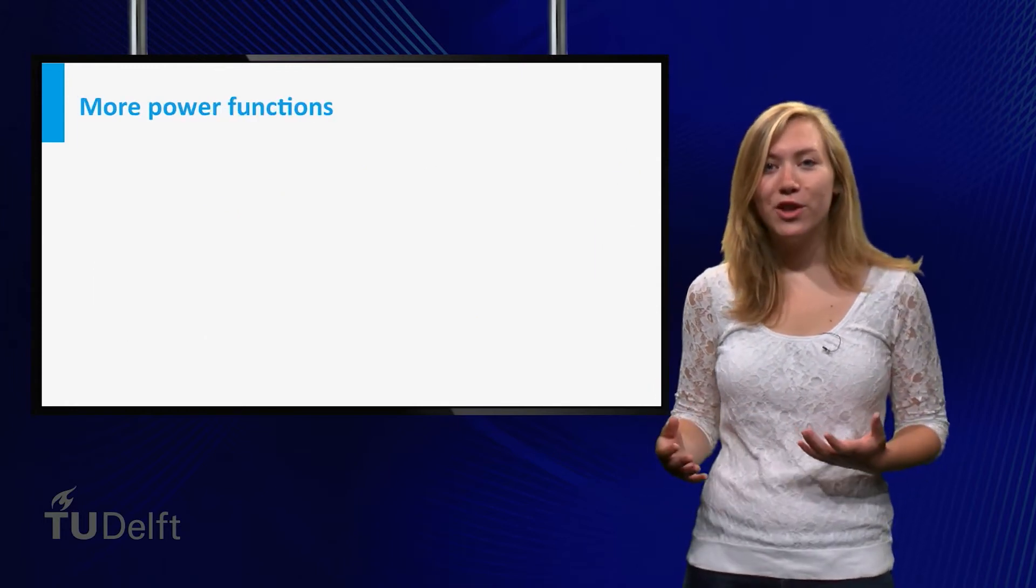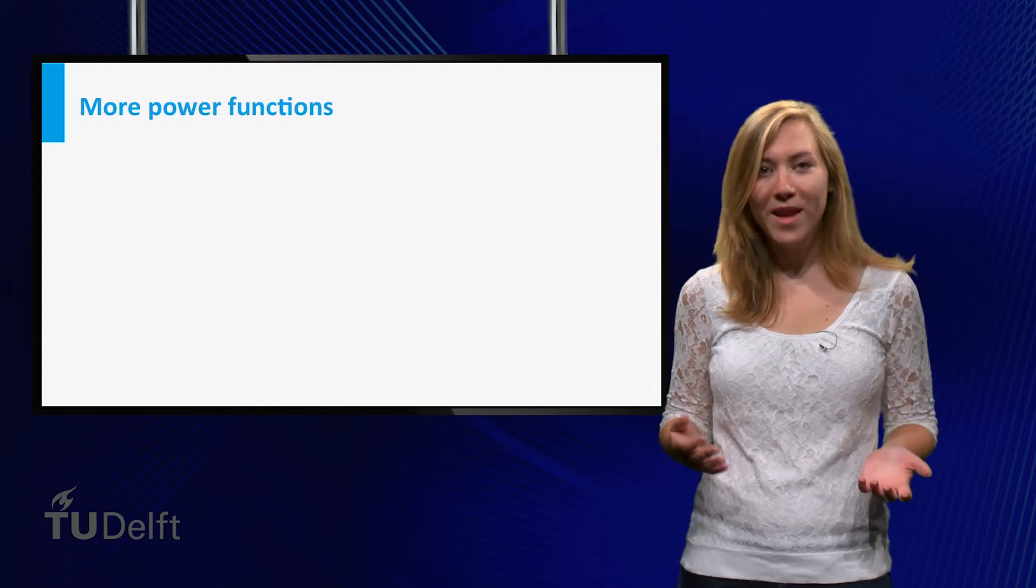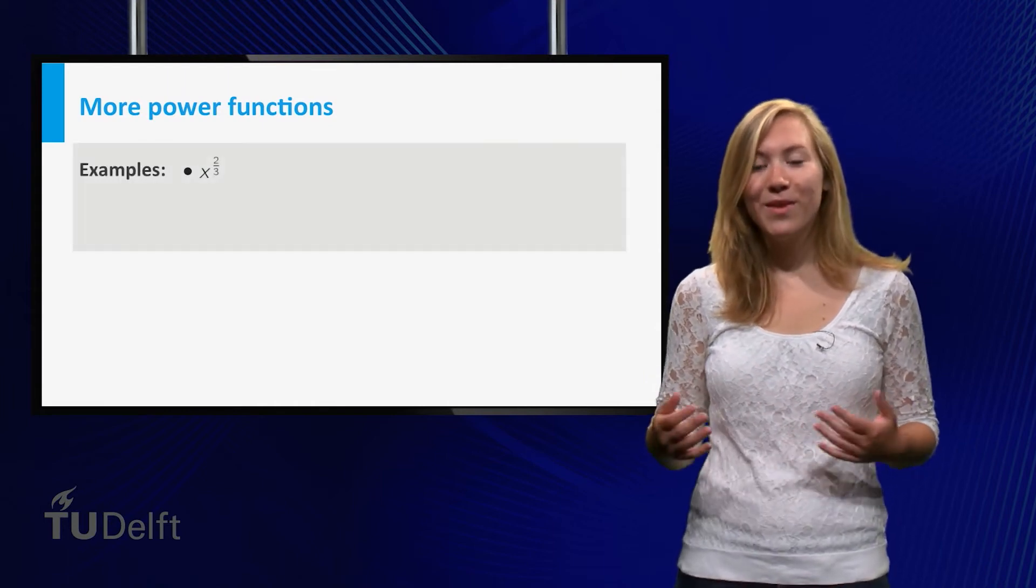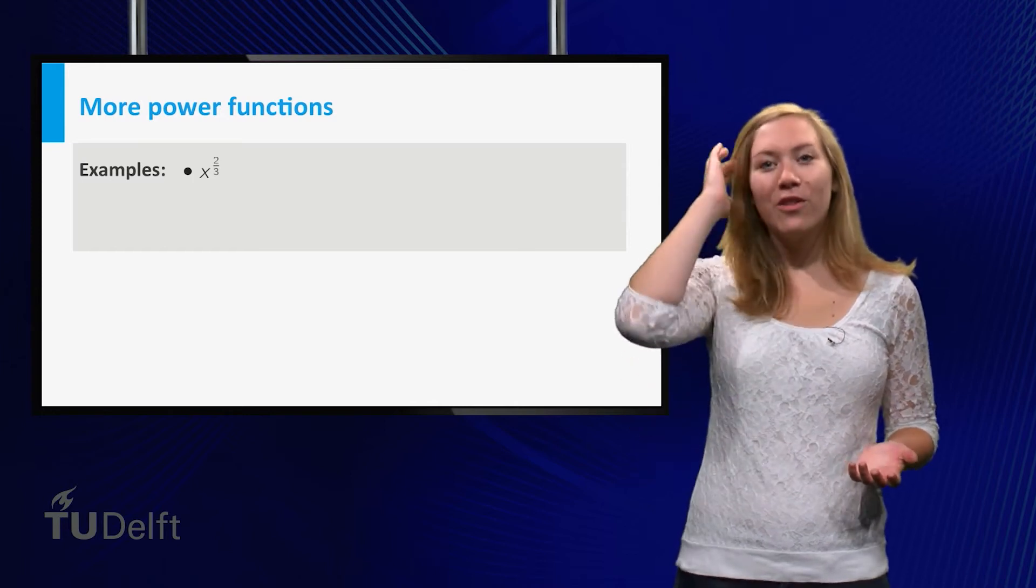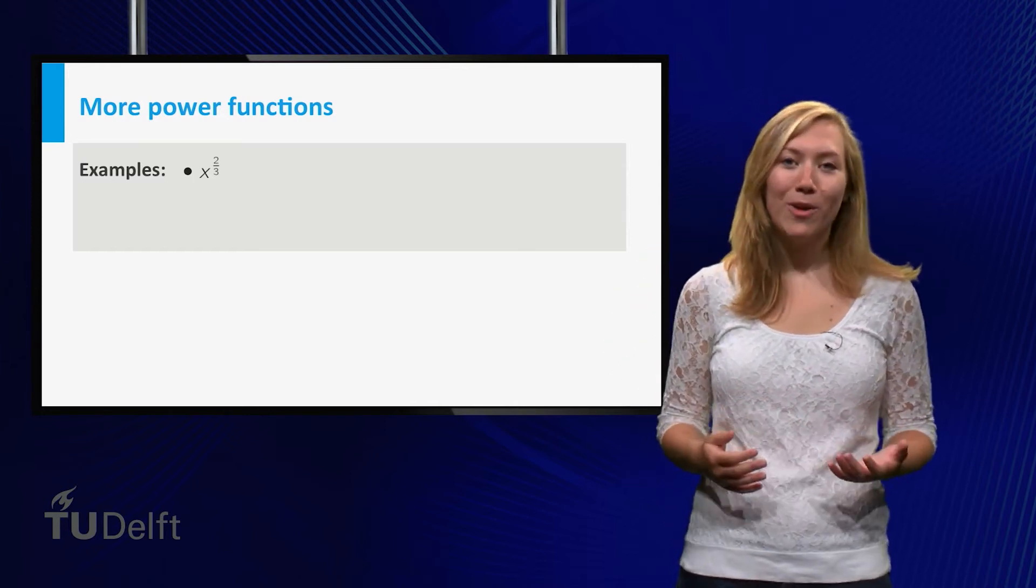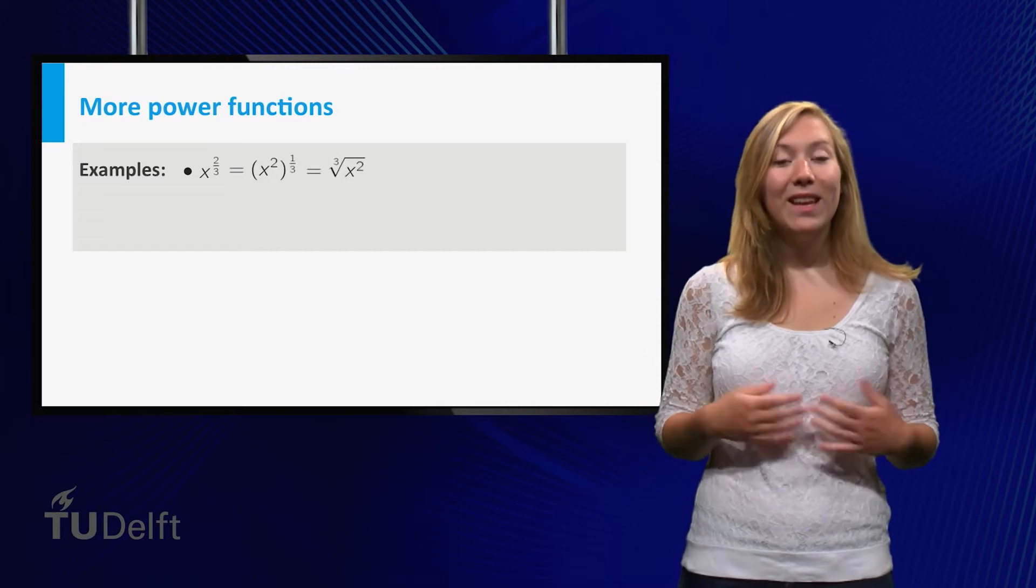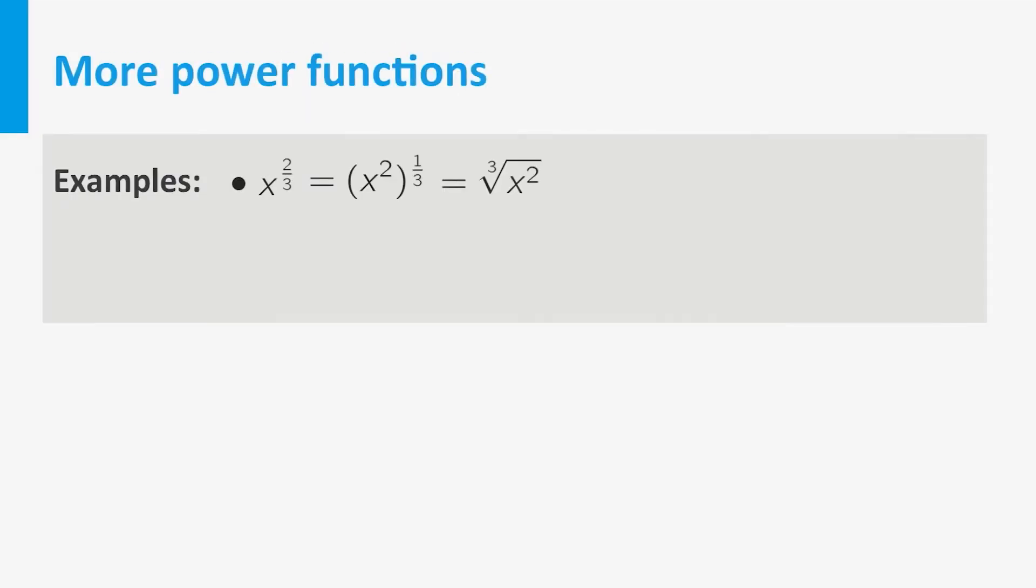Using the power functions that we have defined so far, and the rules of calculation, we can define more general power functions. For example, x to the power 2 over 3 is equal to x squared to the power 1 over 3, which is the same as the cube root of x squared. On the other hand, it is also equal to the square of the cube root of x.